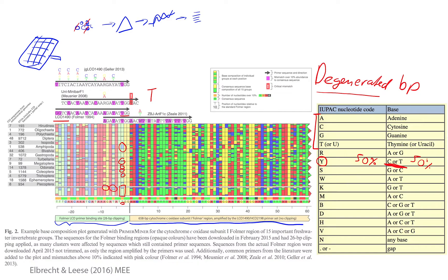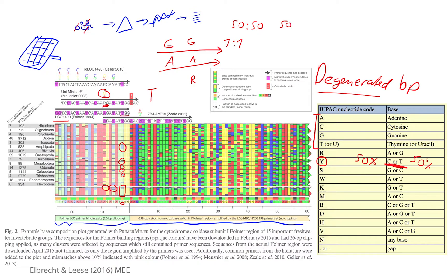Some primers from the literature already incorporate degeneracy — for example, an R inserts a G or an A at a position. When synthesized, 50% of primers would have a G and 50% an A, giving two unique primer sequences at a one-to-one ratio. If we add more degeneracy, introducing another variable position with G and A, we then have two versions times two versions, giving four unique primer versions in total. Each additional variable position multiplies the count — so a primer with several degenerate positions can reach 16 unique primer versions.